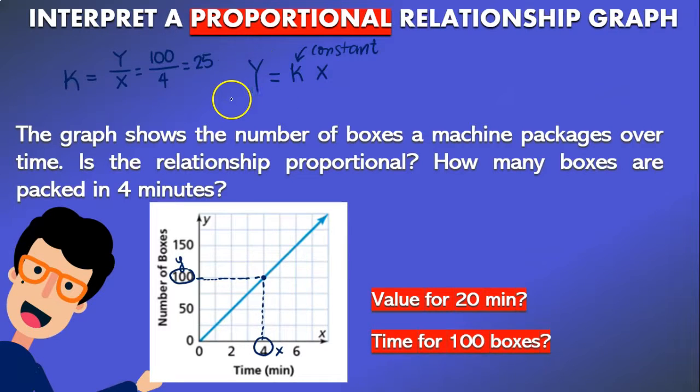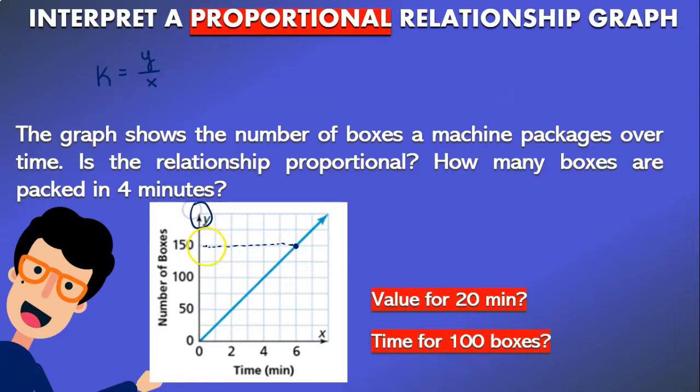Again you can choose any point you want. Let's try another one. Let's try this other point for example and recall that in order to get the value of k that's equal to y divided by x. The value of y is always the vertical axis. This axis right here is always y. So in this case for this point we selected that's going to be 150.